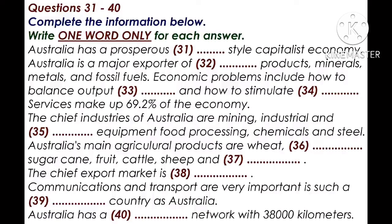Australia has a prosperous Western-style capitalist economy. Australia is a major exporter of agricultural products, minerals, metals, and fossil fuels. Commodity prices have a big impact on the economy. Australia suffered from the low growth and high unemployment typical of the OECD countries in the early 1990s, but the economy has expanded at reasonably steady rates in recent years. Short-term economic problems include how to balance output and inflation and how to stimulate exports.